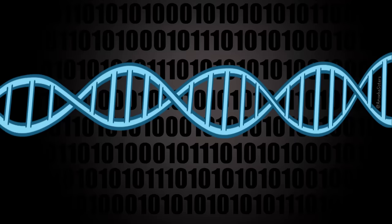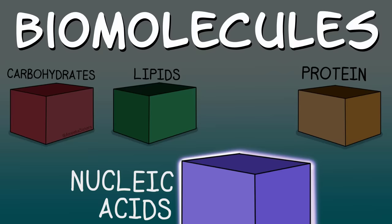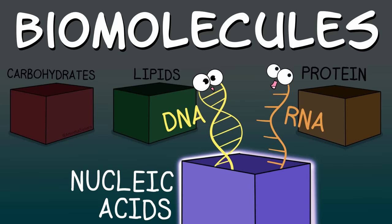Many people understand that a mutation is a change of genetic material, more specifically a change within a nucleic acid. RNA and DNA are both types of nucleic acids, therefore anything with RNA or DNA can have a mutation.